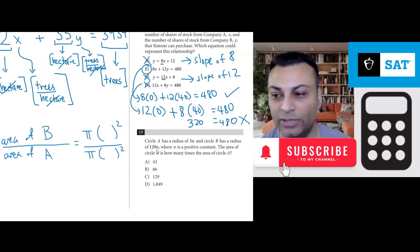Circle B has a radius of 129n, so this is 129n. Circle A has a radius of 3n, so this is 3n, the radius of circle A. In this ratio the pi will cancel, pi divided by pi is 1.